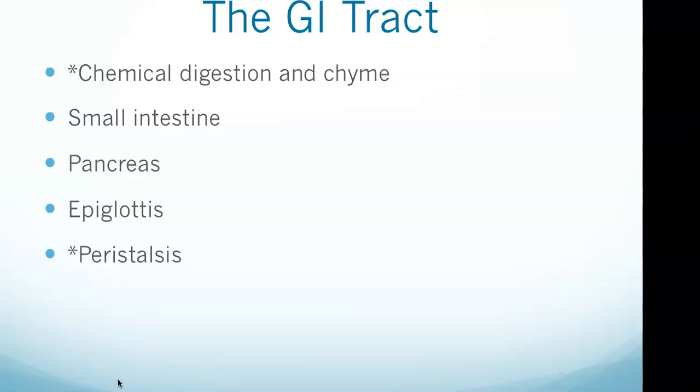The pancreas digests lipids and fats in the small intestine. The epiglottis is a flap of cartilage that covers the trachea and routes food to the esophagus while in the process of swallowing. Peristalsis is the wave-like smooth muscular contraction of the digestive system, beginning in the esophagus, that moves food along the digestive tract in the normal direction, which is mouth to anus.